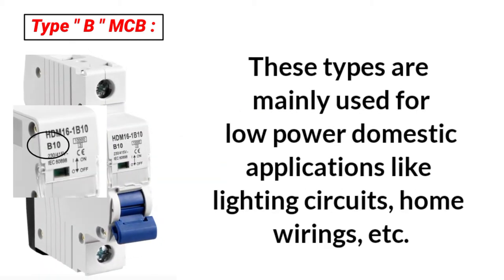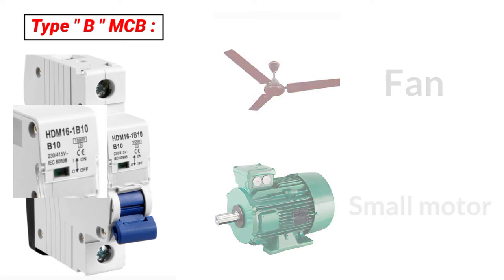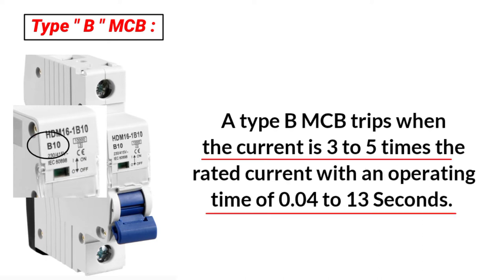Type B MCP is used for low power domestic applications. It is used for purely resistive loads and small inductive loads such as a fan or a small machine. The operating time for Type B MCP is 0.04 to 13 seconds. When a fault occurs, the MCP will trip within that time.